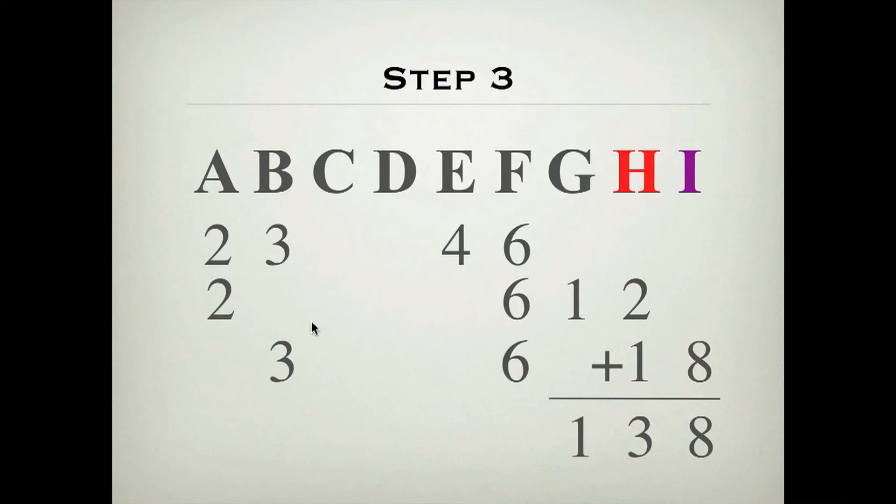Now, we have finished multiplying the 6 by all the digits, the 2 and the 3, of the multiplier. So, this is the finish of the first partial product.